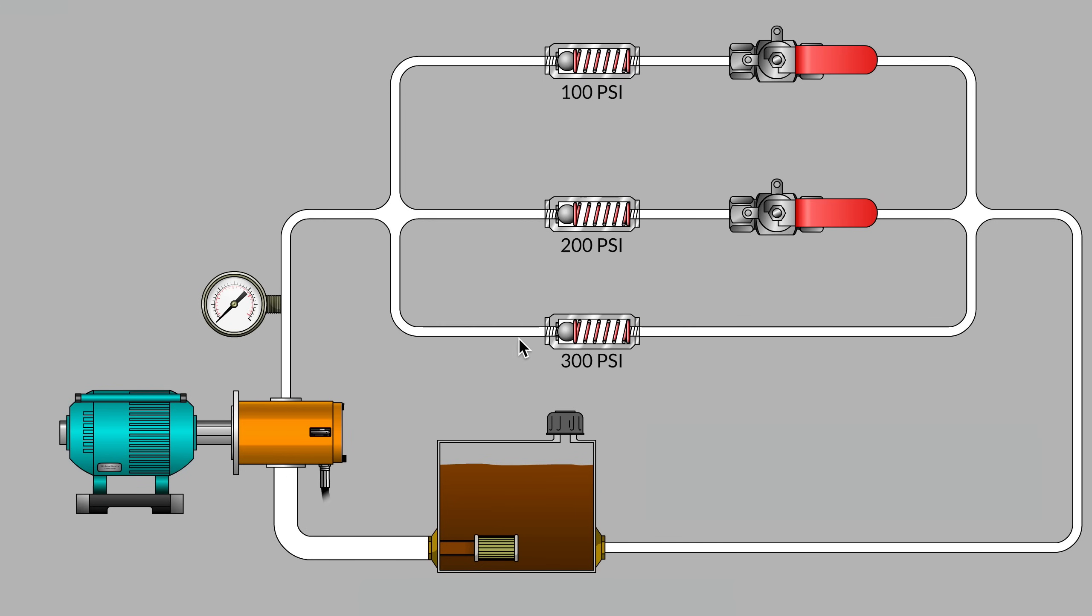What's not typical about this system is that each of our branches has only a spring-loaded check valve as the main branch load. Typically each of these three branches would be doing something quite a bit more purposeful. You can imagine each one of the spring-loaded check valves being replaced by, say, a hydraulic motor that has different amounts of loading on it, different amount of counter torque against the motor shaft that is turning perhaps an auger feed screw or perhaps turning a winch.